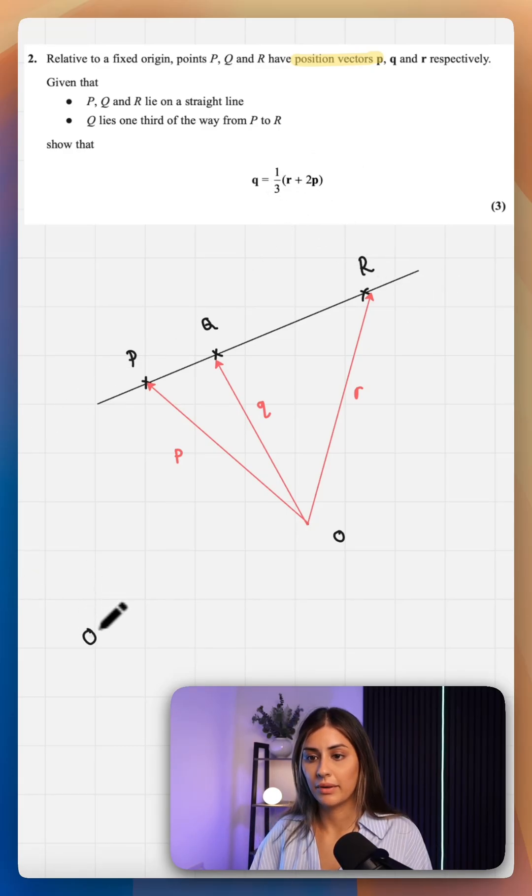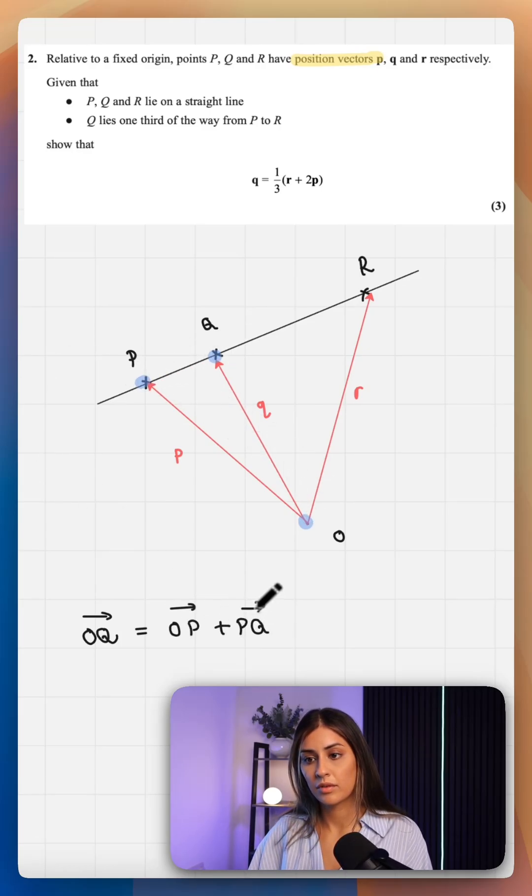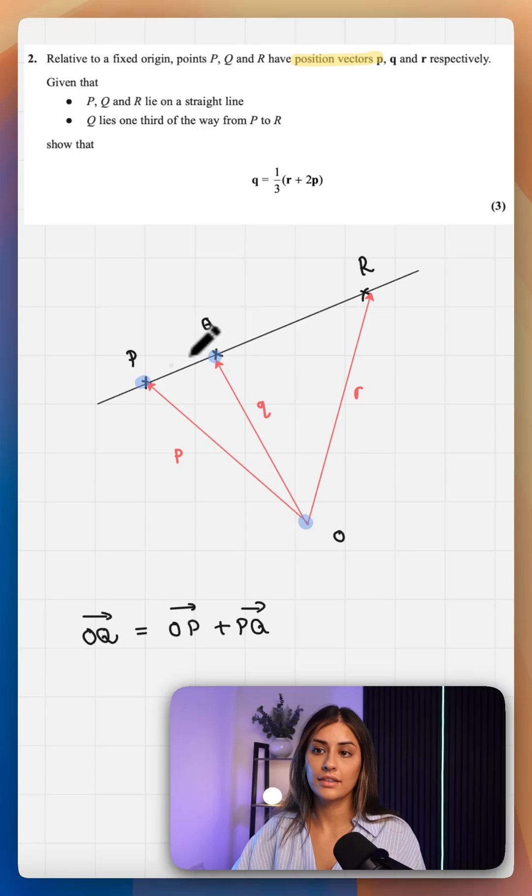Let's write down the vector pathway from O to Q, subbing in values. So to go from O to Q, we can go from O to P plus P to Q. We know that this is a third and that therefore would be two thirds.